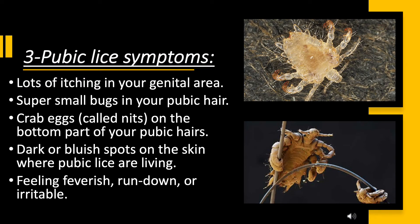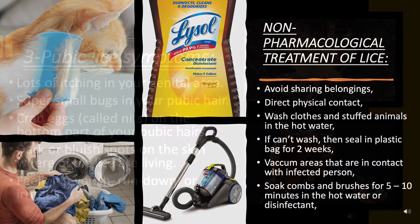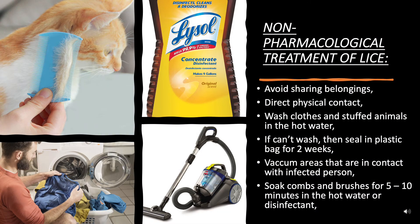Pubic lice symptoms include lots of itching in the genital area, very small bugs in the pubic hair, crab eggs (called nits) on the bottom part of pubic hairs, dark or bluish spots on the skin where pubic lice are living, and feeling feverish, run-down, or irritable.